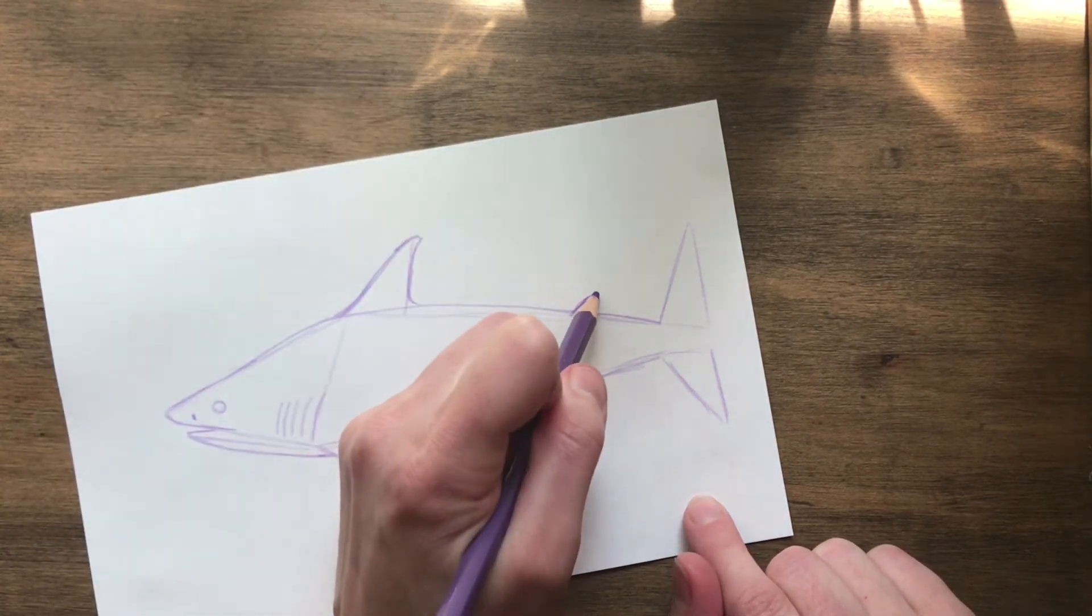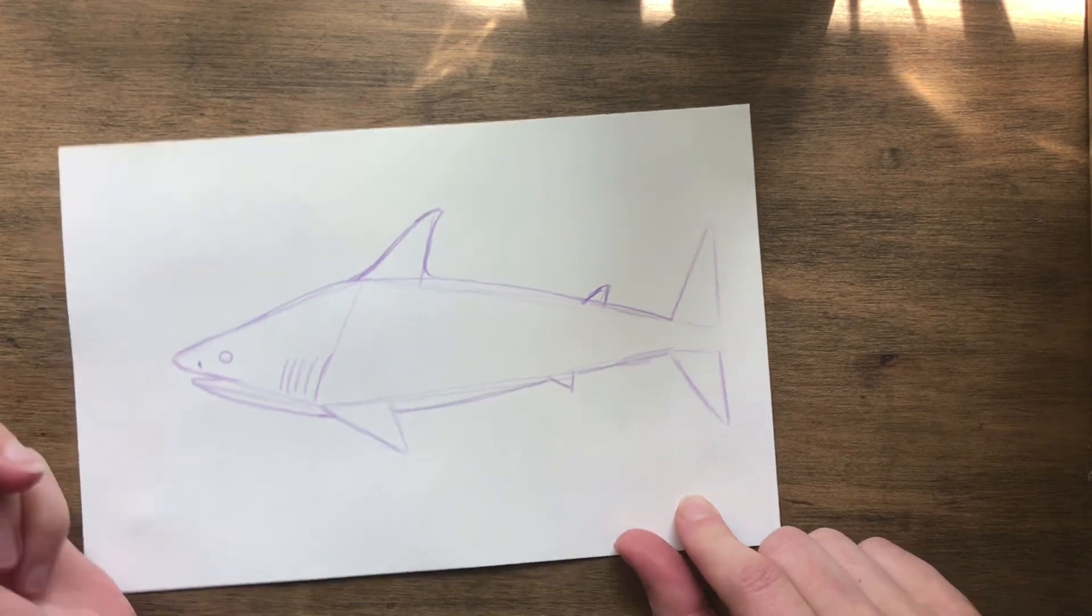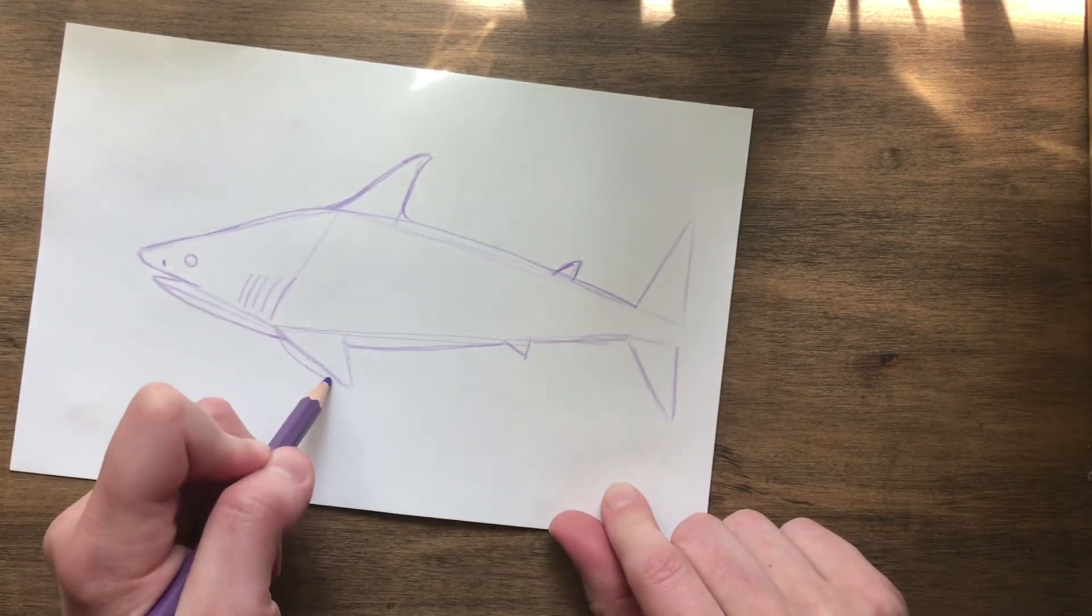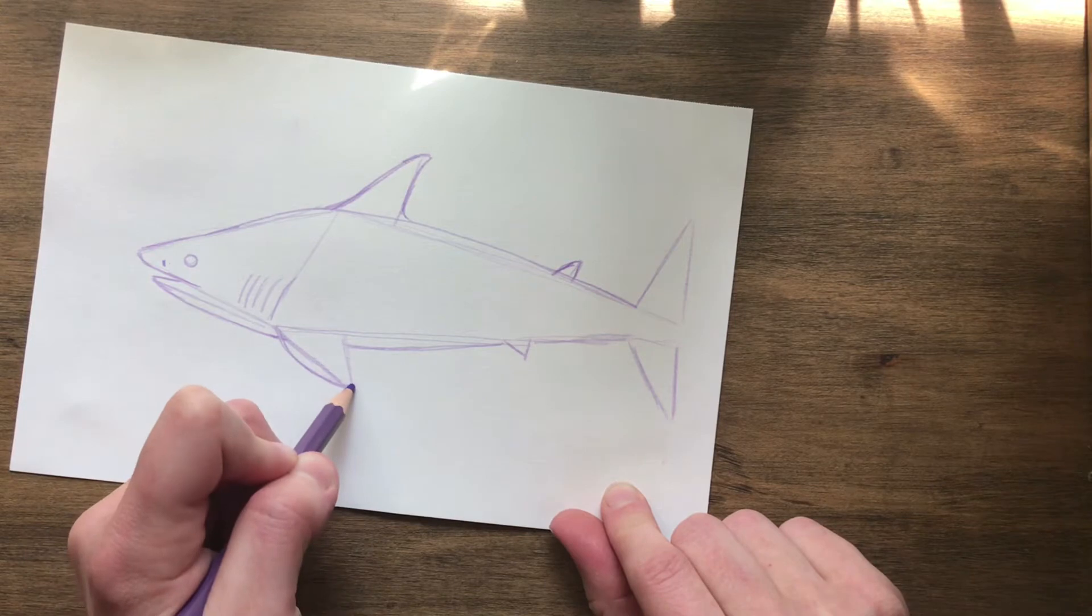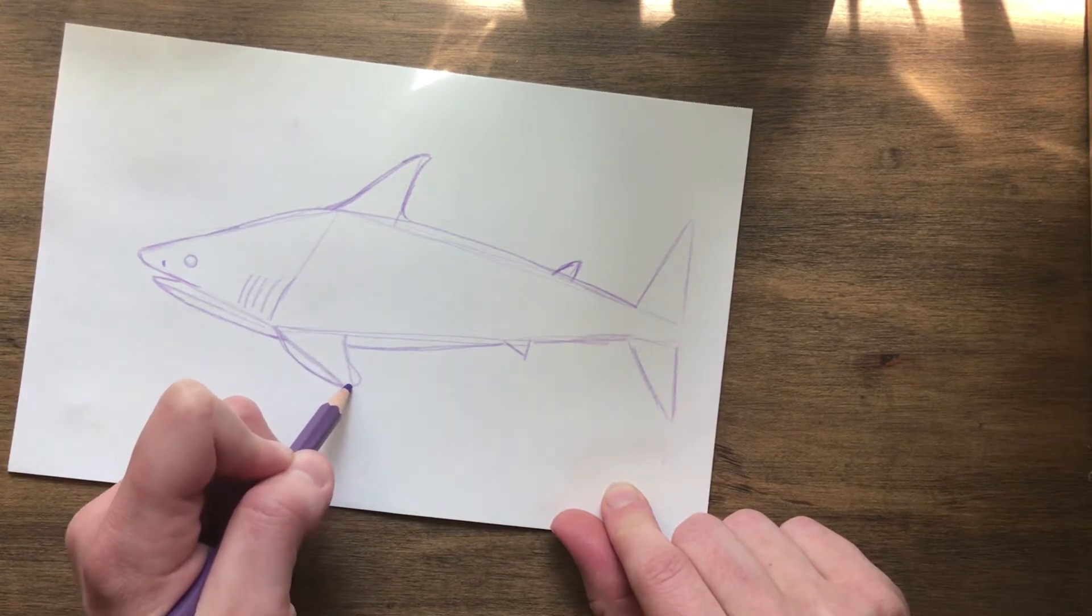You are going to kind of do the same thing on the little fins too. And this one you are going to really round it on the front and then curve the back.